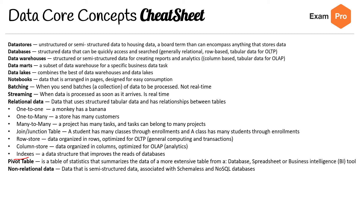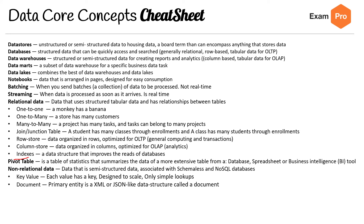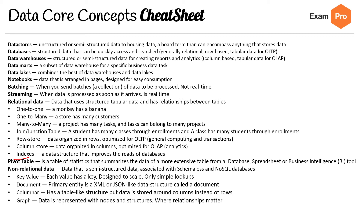Non-relational data is semi-structured data associated with schemeless nodes — NoSQL databases. Types include: key-value (each value has a key, designed to scale for simple lookups — simple and without many features), document (primary entities are XML or JSON-like data structures called documents), columnar (table-like structure but data stored around columns instead of rows), and graph (data represented with nodes and edges where relationships matter).